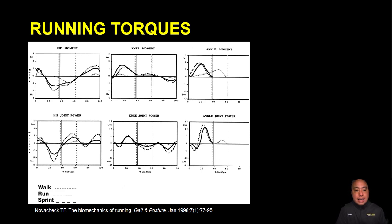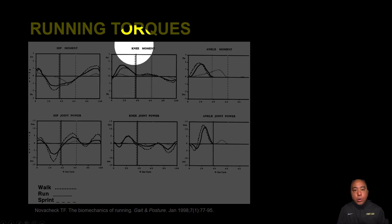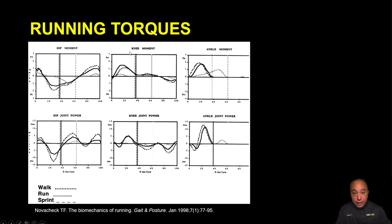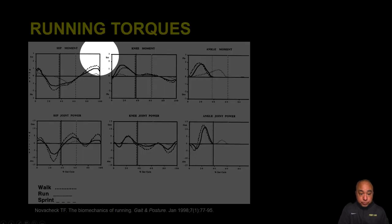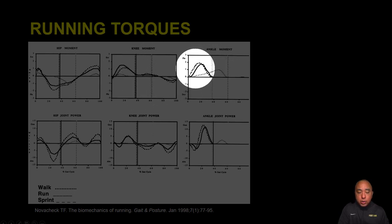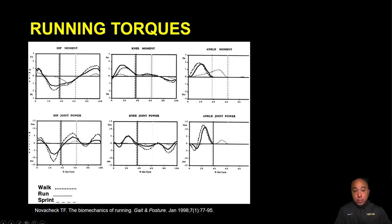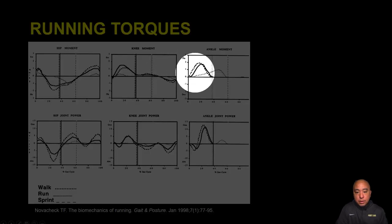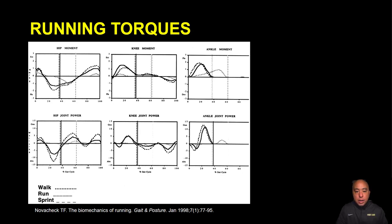The quadriceps — knee extensors — create a knee extensor moment that allows the knee to flex eccentrically during the first half of stance, controlling shock absorption, followed by concentric contraction to propel the runner forward. At the ankle joint, the internal moment is a plantar flexor moment. As the runner transitions from absorption to propulsion, the gastrocnemius, soleus, and posterior tibialis muscles generate that plantar flexion torque to toe-off in the late stance.